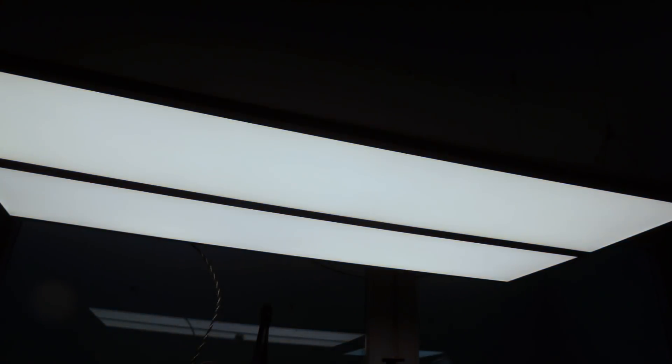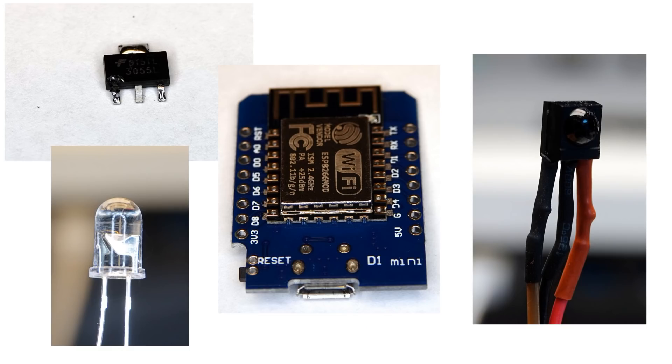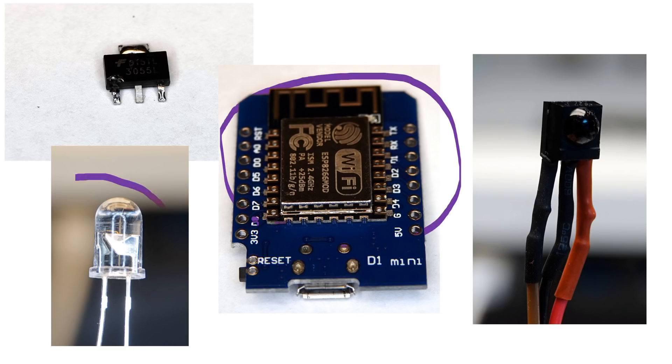Blue light in the evening can create problems for our sleep. Especially very white LED lights around us produce lots of it and prevent us from falling asleep after a hard day's work. Let's build a sleep accelerator device using an ESP8266, an infrared LED, and a MOSFET.